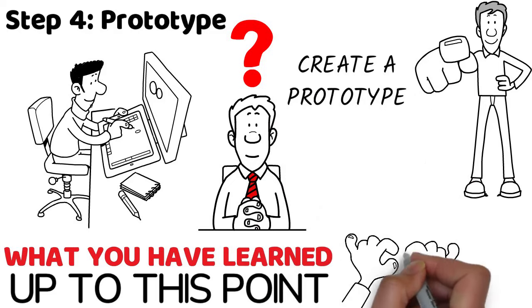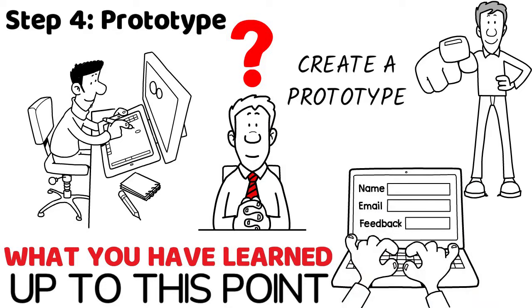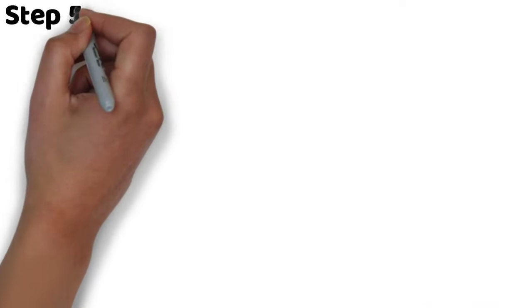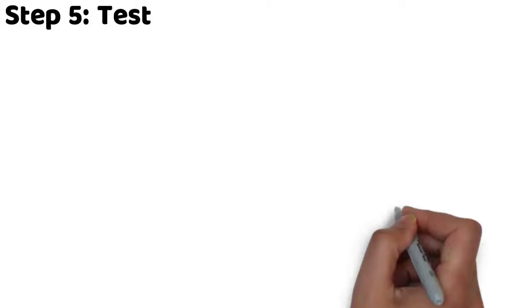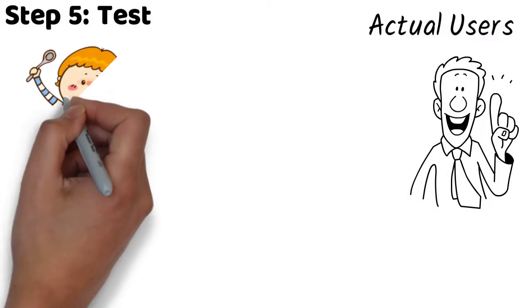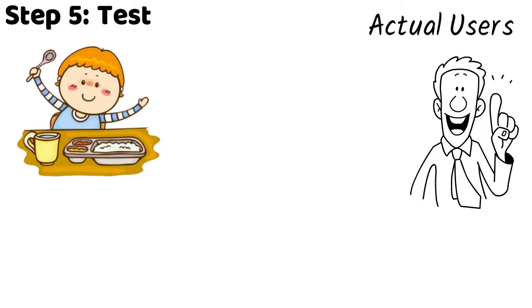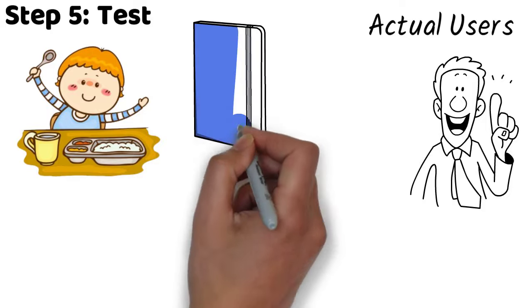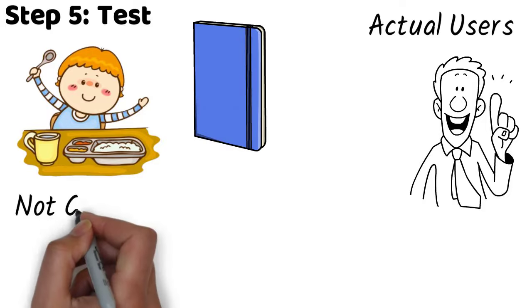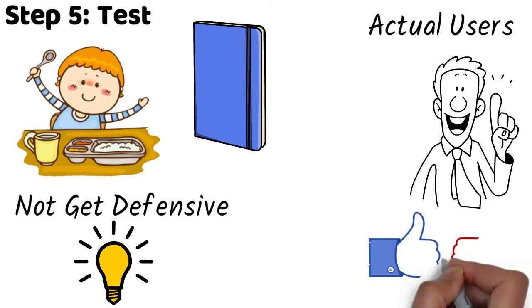It doesn't need to be the finished article, just something that you can use to collect feedback from. Step 5, test. Now test your prototype with actual users. In the case of toddlers you may have decided to create a range of ready to eat nutritious meals for toddlers or an easy to follow recipe book for busy parents. It's important to not get defensive with your idea and to gather as much feedback on what your target customers like and dislike about your prototype.